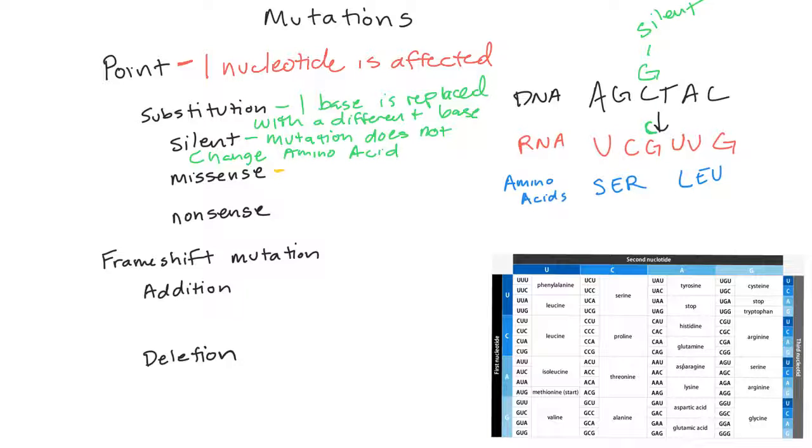During a missense, one base changes the amino acid. So let's say this A was a C, so it was changed to a C.